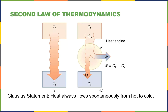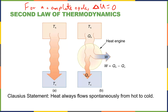A heat engine is drawn this way for a specific reason: the width of the lines representing QH, QC, and work should reflect energy conservation. For a complete cycle of a heat engine, ΔU = 0. That's important because internal energy tells us about the average kinetic energy of the molecules — in other words, the temperature. If ΔU increased every cycle, what happens to the temperature each cycle?